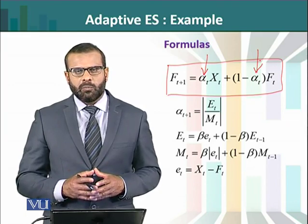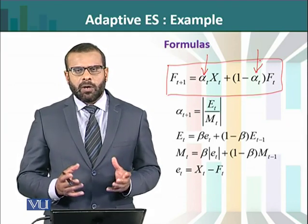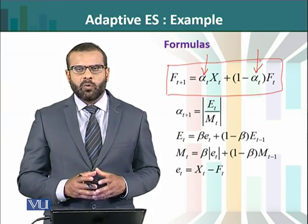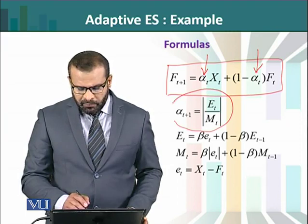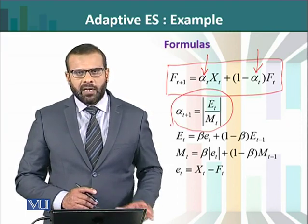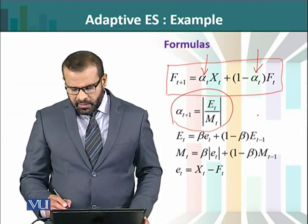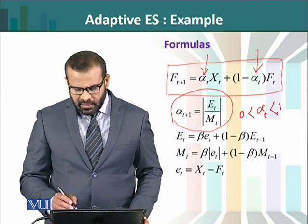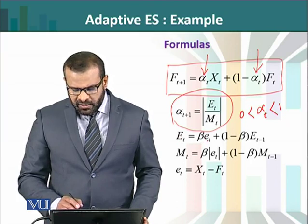If we have actual observations and their forecasts, and the forecast errors have already been found, then we will calculate the forecast error. Using that knowledge, we want to update alpha. The formula for updating alpha is the absolute value of E_t divided by M_t. Since alpha is a number between 0 and 1, it cannot be negative — that is why we use the absolute value.